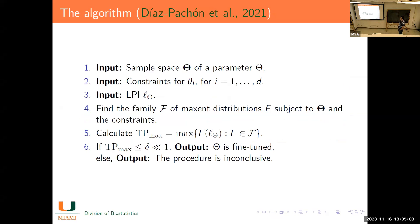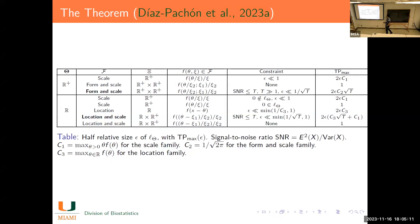We have a theorem summarized in a table. Suppose the parameter can only live in the positive reals — for instance, the density of the universe or the amplitude of primordial fluctuations, which cannot be negative. If we consider a scale family of distributions (a good representative being the exponential distribution), and the life-permitting interval has size epsilon that is very small, then the tuning probability is directly proportional to the size of the interval.